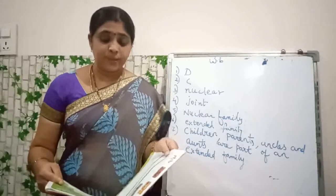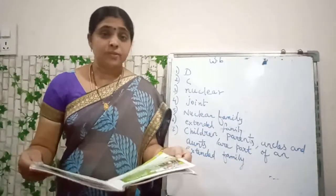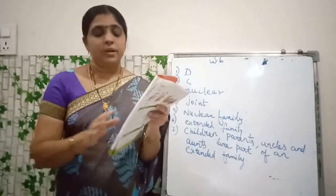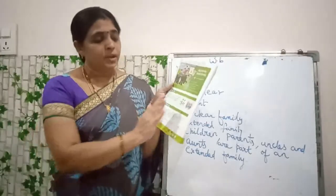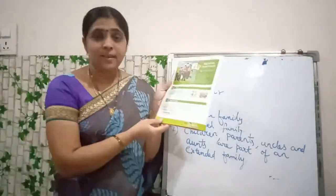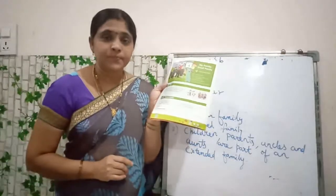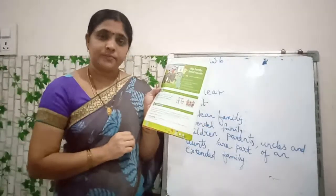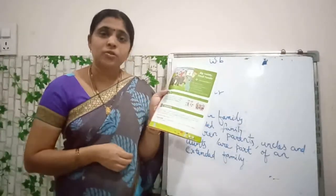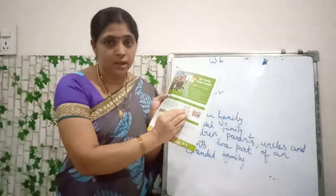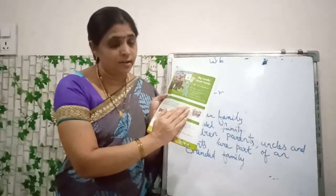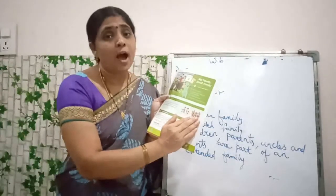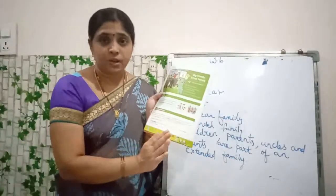Open your textbooks to page number 12. Look at the pictures. There are two pictures on page number 12. What are these two pictures, children? Small family and big family. What is the difference between these two? Here, only children and parents are there. And here, children along with their parents, grandparents, uncle and aunt and cousins.